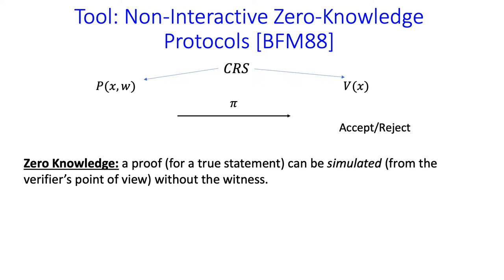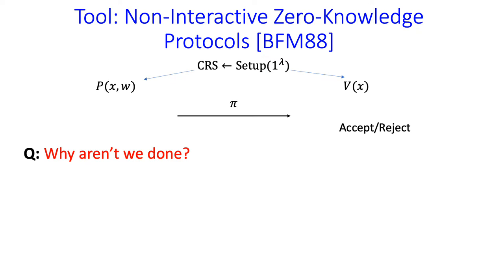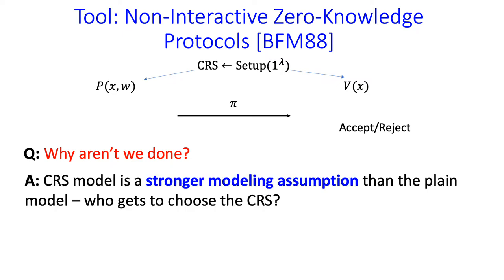In this case, the impossibility results for zero-knowledge can be overcome, and one-message zero-knowledge protocols in this model exist. We have to revisit the zero-knowledge definition: a proof for a true statement should be simulatable given a statement and not the witness. Here we relax this to allow the simulator to also tamper with the common reference string as long as it's done in an indistinguishable way. Such an object is known based on bilinear maps. But this CRS modeling assumption is an important distinction from the plain model, and there isn't any obvious way to convert this protocol into a sound and zero-knowledge protocol in the two-message plain model.